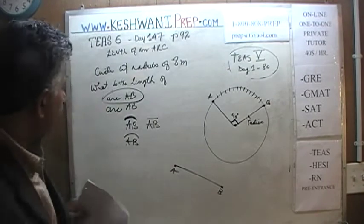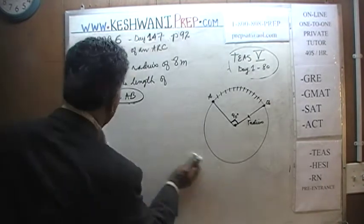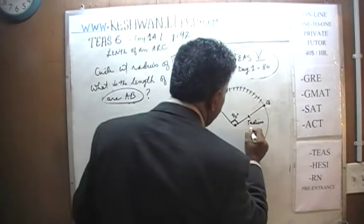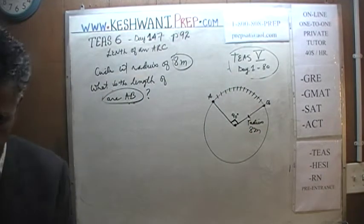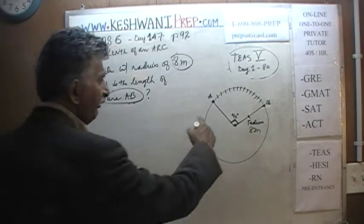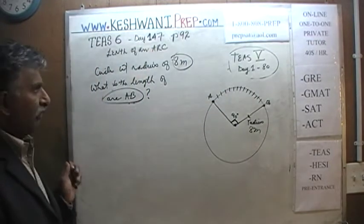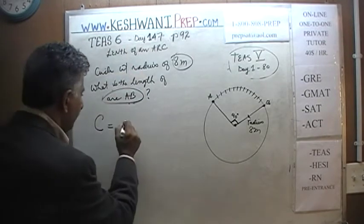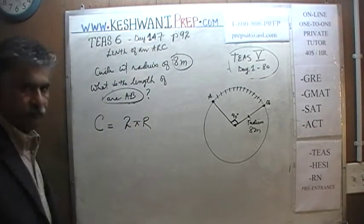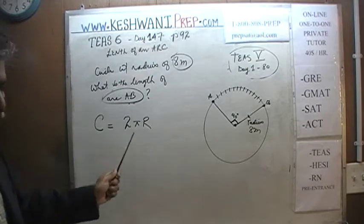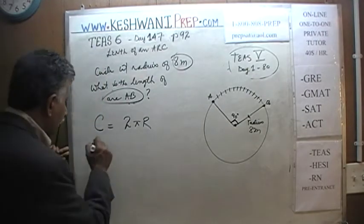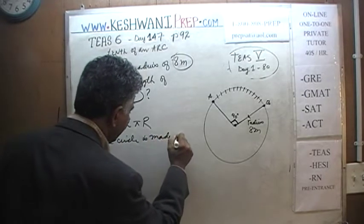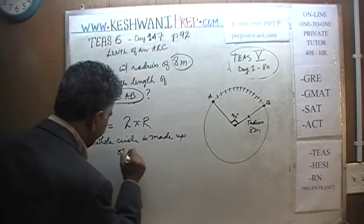What is the length of arc AB? We know the radius is 8 meters. We also know the distance across the entire circle — the perimeter of the circle is called the circumference, which we know is 2 times pi times r. We have to understand that this is the whole circle — the distance around the entire circle. The whole circle is made up of 360 degrees.